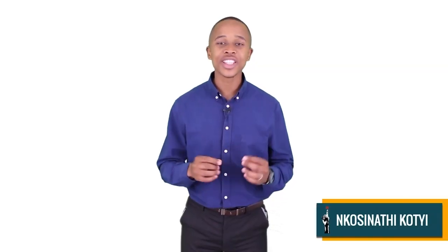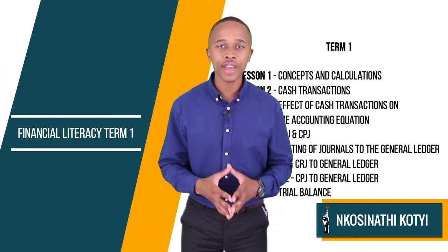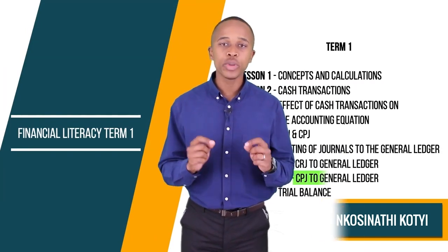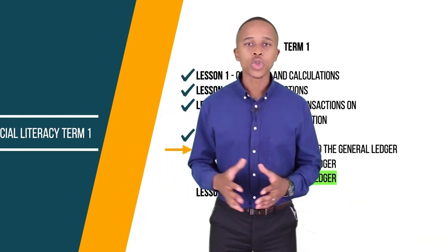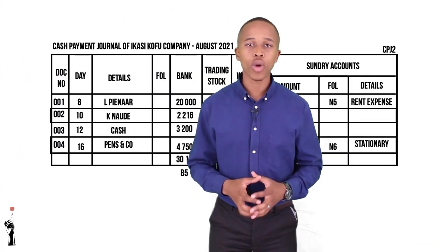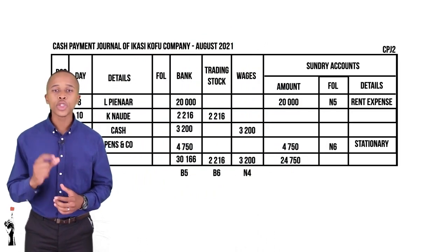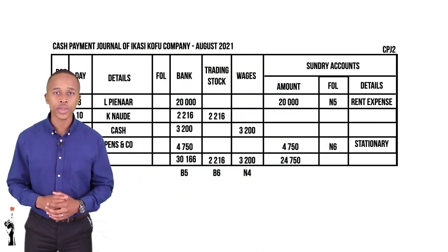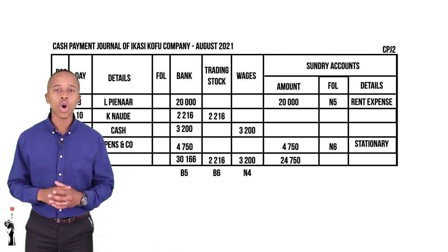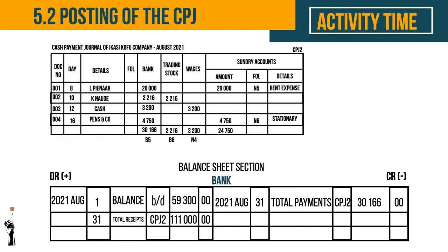Good day, Grade Nines. This is Lesson 5.2, a continuation of Lesson 5. We will be looking at the CPJ and how to enter this on the general ledger. Let's have a look at the CPJ of Ikasi Kofu Kamban. As you can see from the table behind me, the entries on the CPJ have already been placed in the necessary columns. How would we put this on the general ledger?